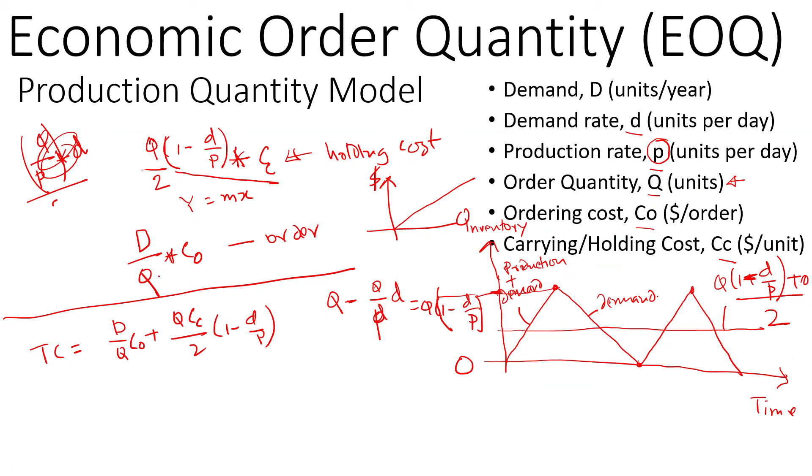On the other hand, the ordering cost is y equals some constant by x, so it's an inverse curve like this. The total will be something like this, similar to what we've seen before in the basic economic model. The optimum cost will be somewhere on the line where the slope is zero, parallel to the x-axis.